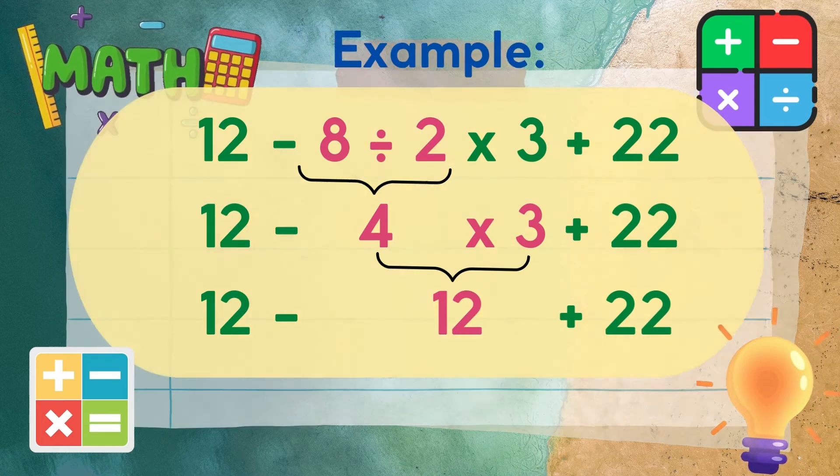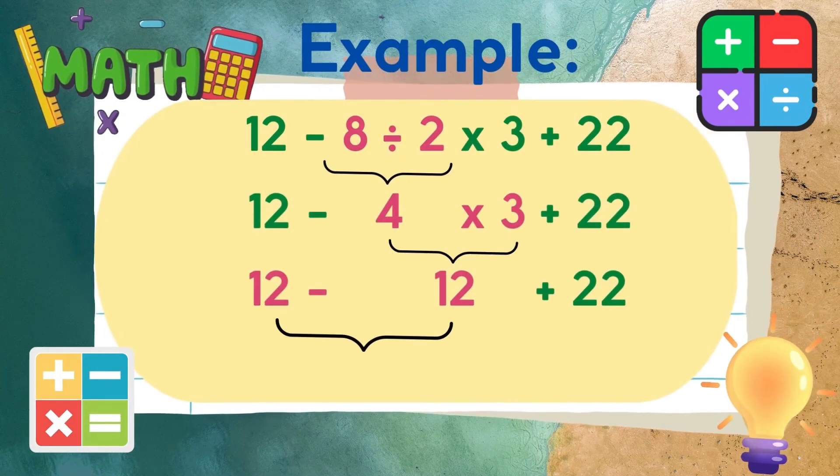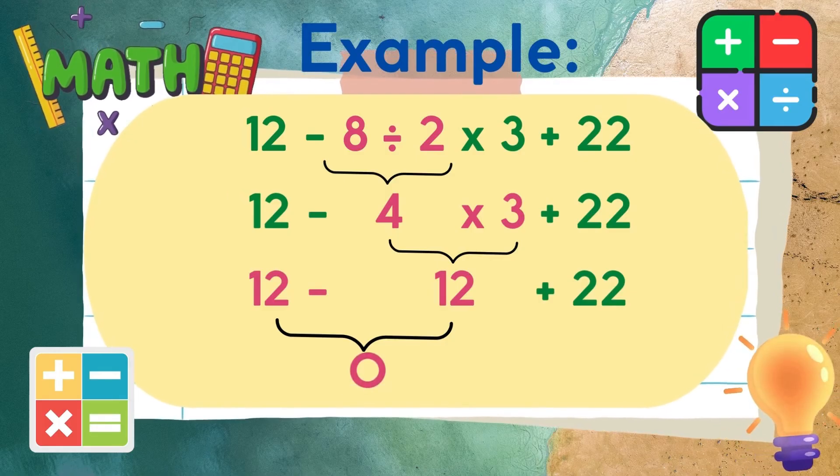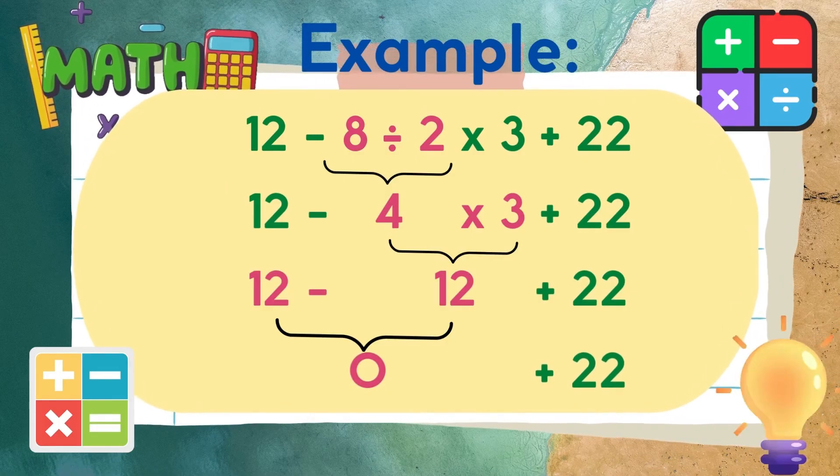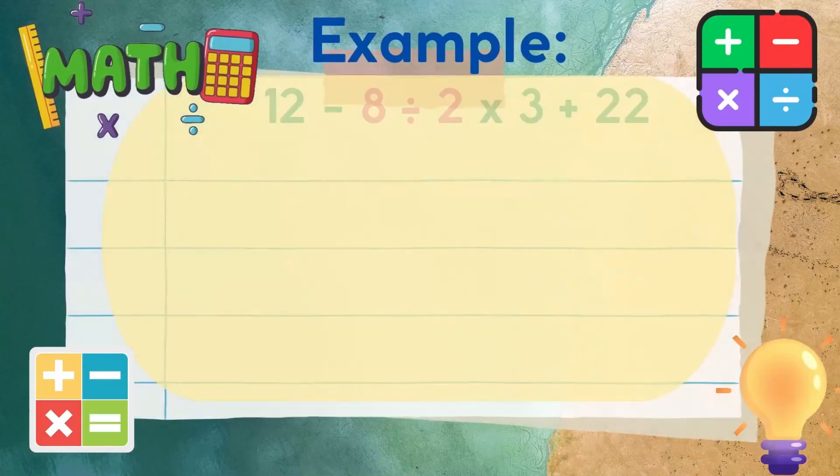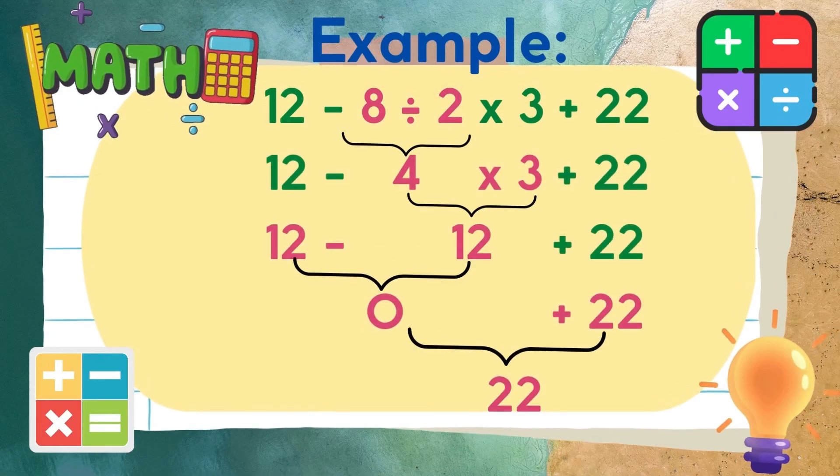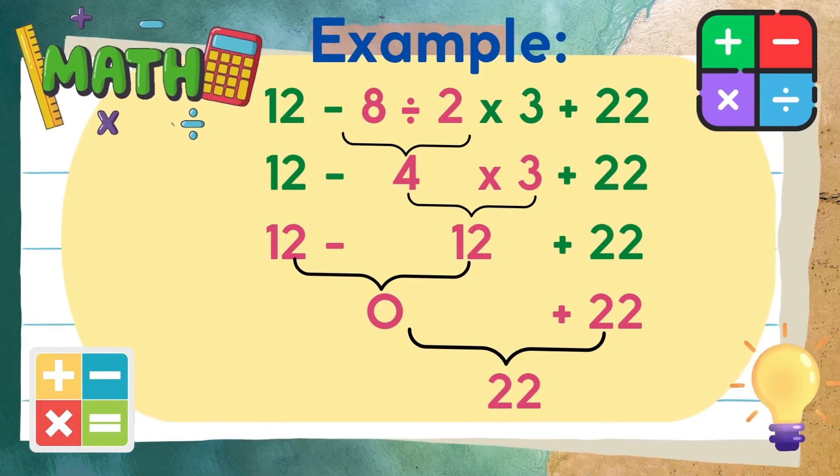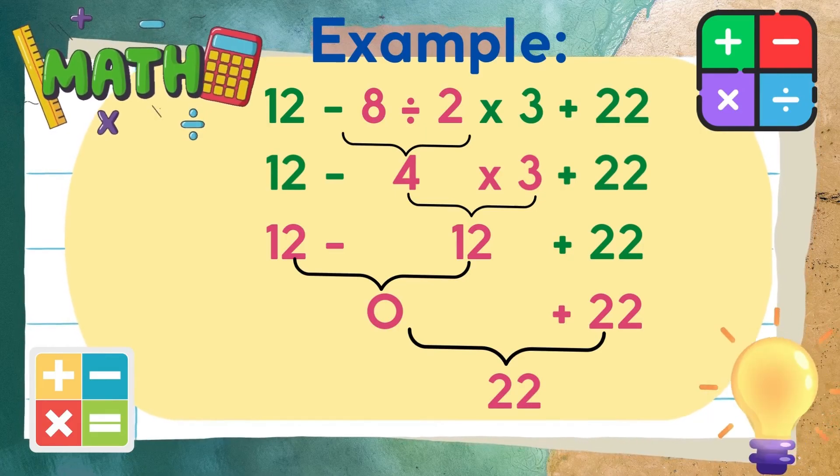Now let's perform the operations of subtraction and addition. 12 minus 12 is equal to 0. And finally, let's add. 0 plus 22 is equal to 22.